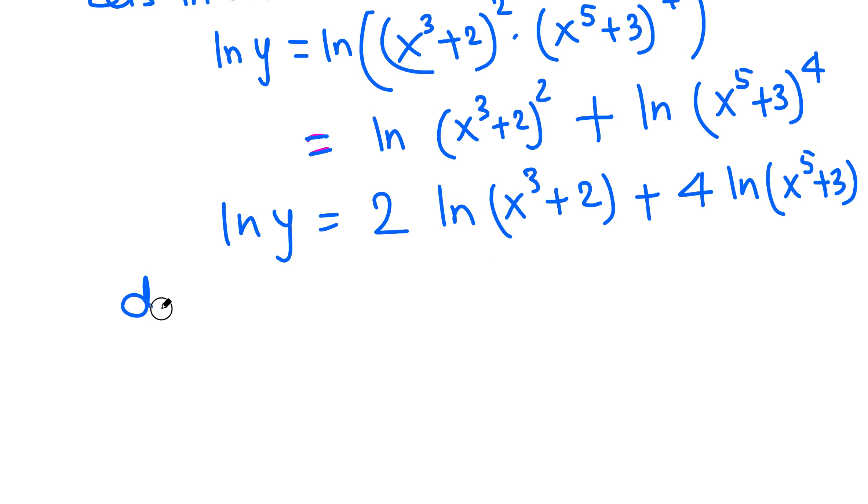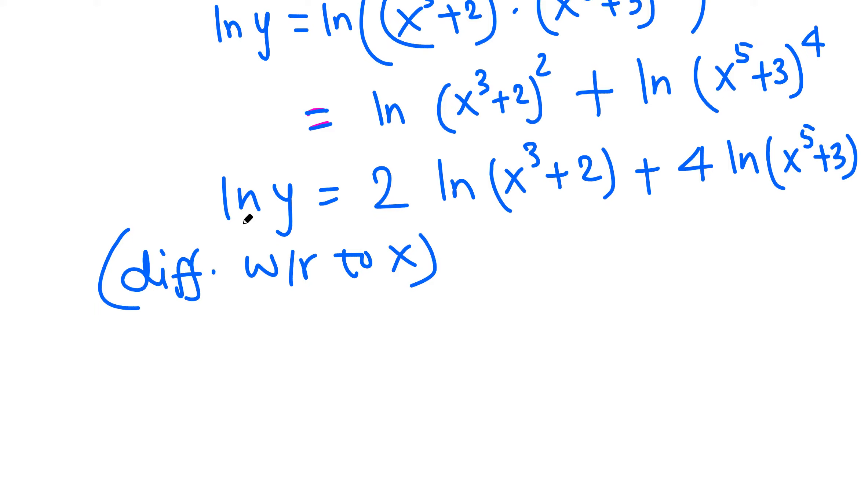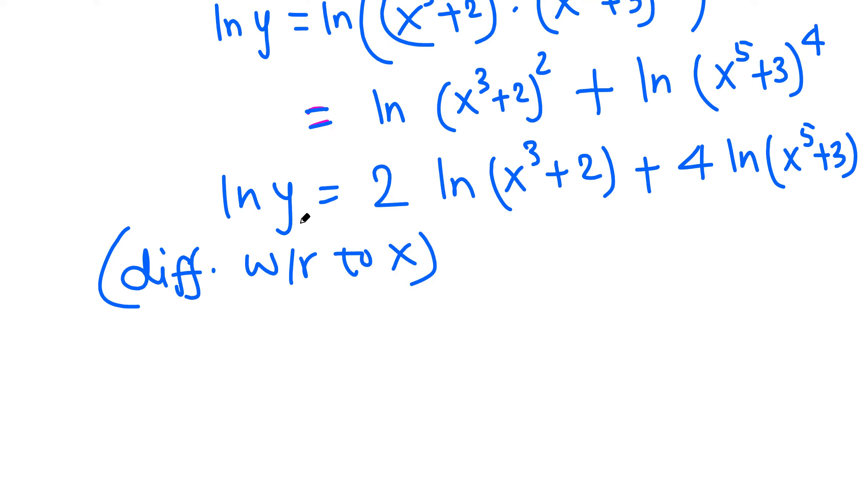Now differentiate both sides with respect to x. But this is a function of y, and we are differentiating with respect to x, so we must use the chain rule. As we know, when we have ln of some function of x, its derivative is 1 over the argument times u prime. We will be using this.